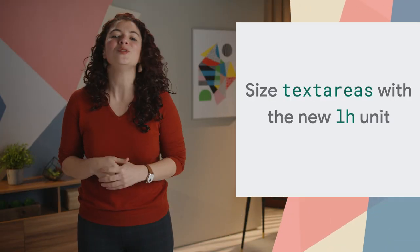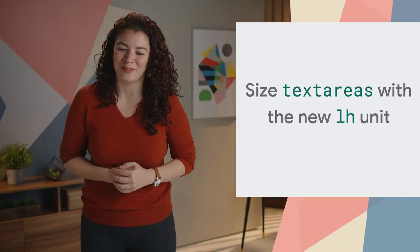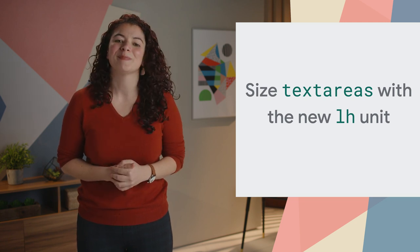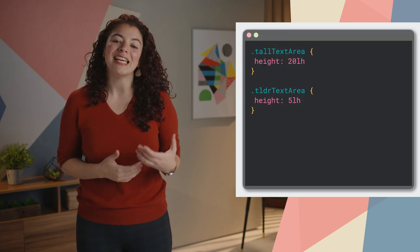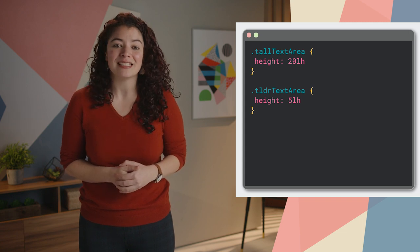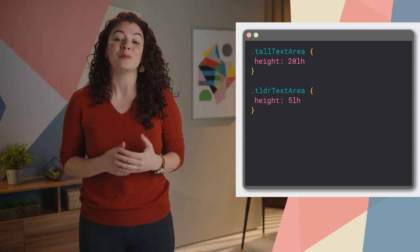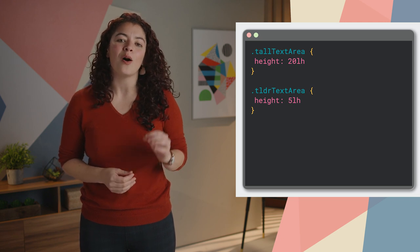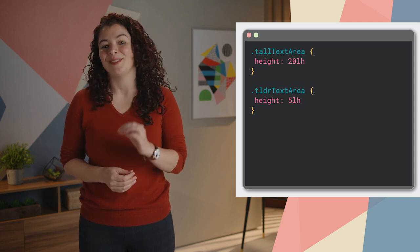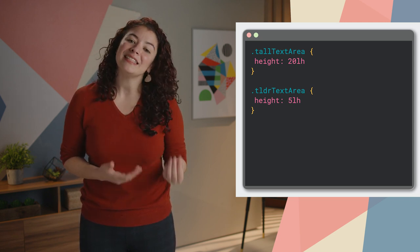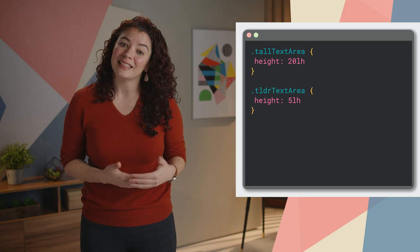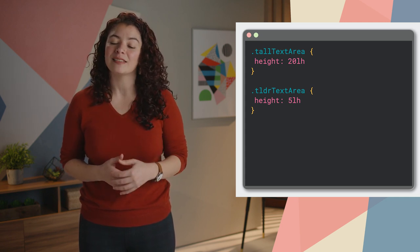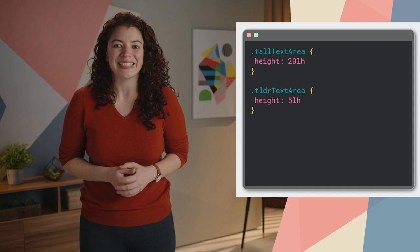Now, a few new CSS features, starting with a new length unit: LH. The LH CSS unit is equal to the computed value of the line-height property on the element on which it is used. This allows a text area to be given a height that is the same as the number of lines of expected text.